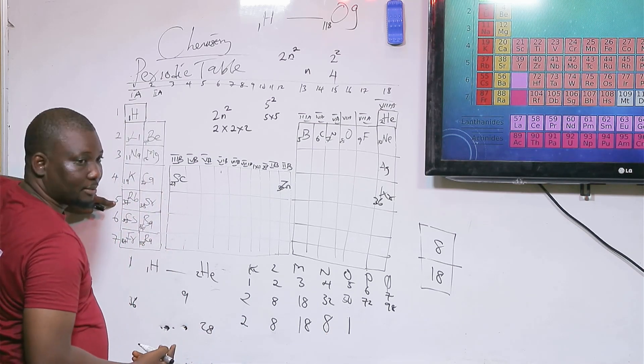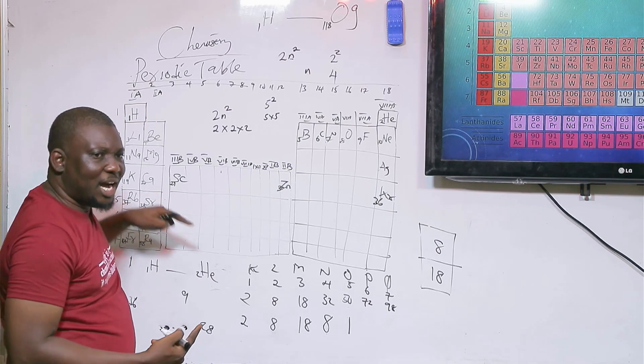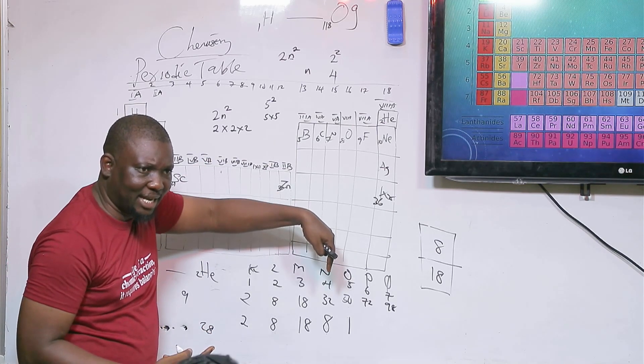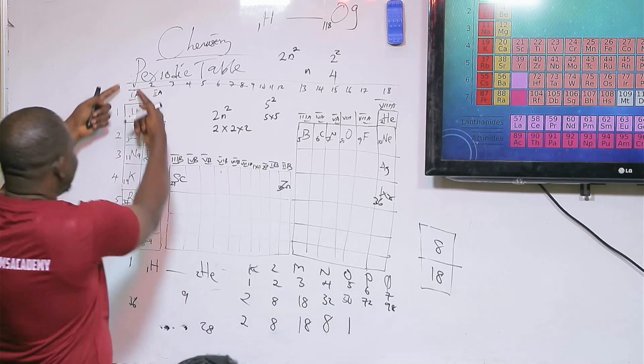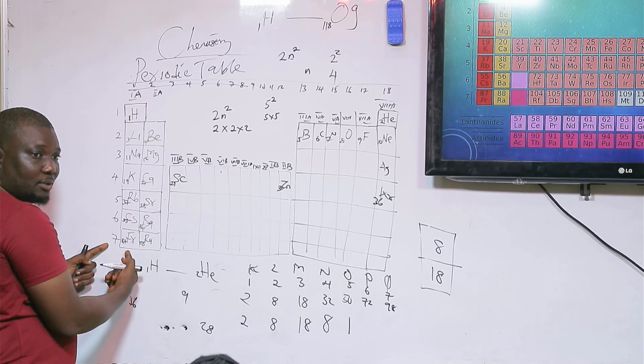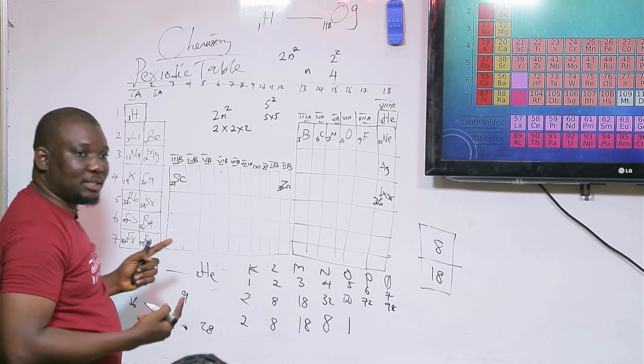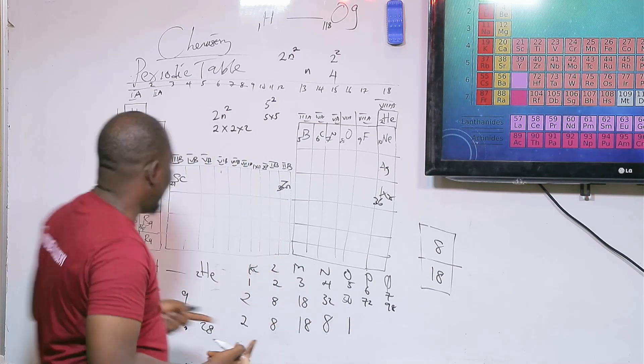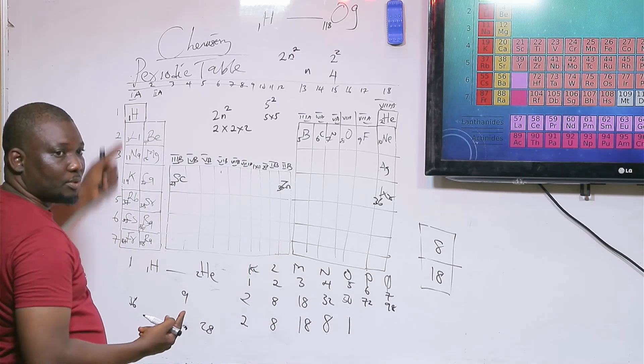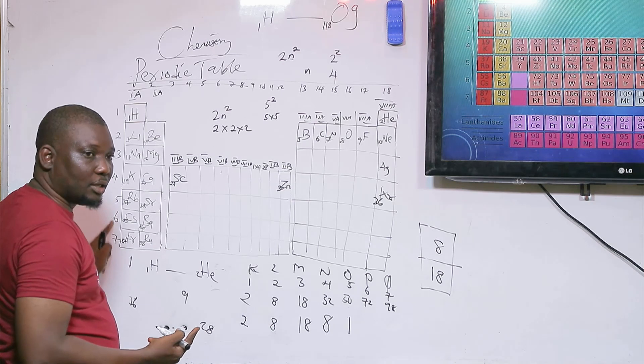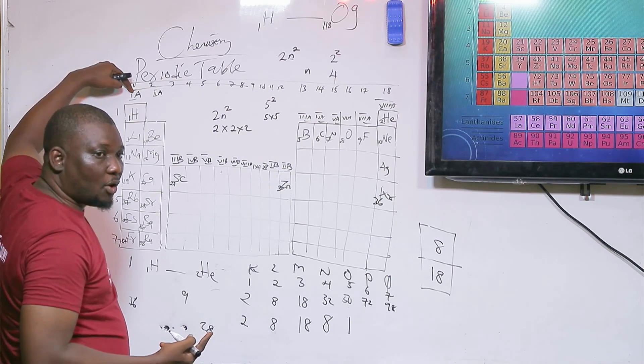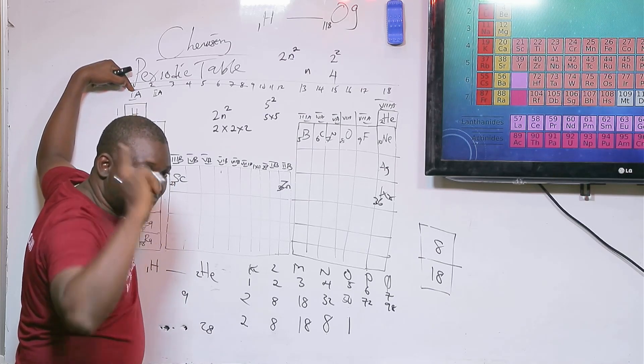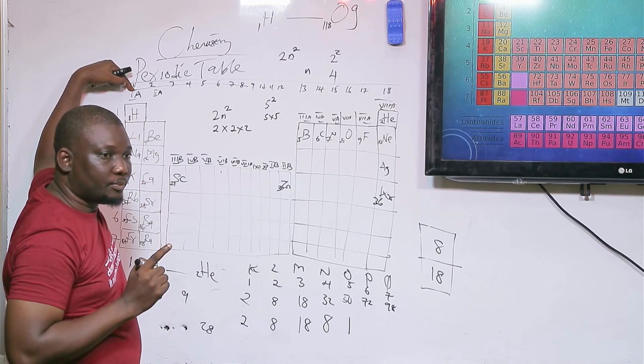How many atomic shells? 5. That's why it's in period 5. And if you look at the last shell, how many valence electrons are there? 1. That is why it's in group 1. Elements in the same group have the same number of valence electrons. All the elements in this group have 1 valence electron.